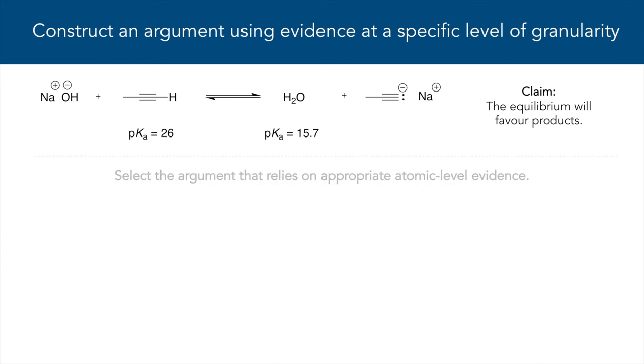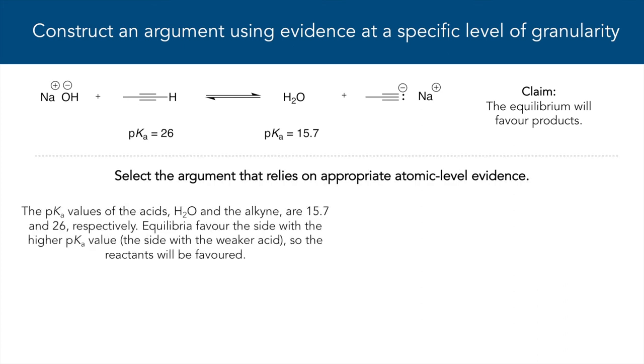Select the argument that supports the given claim using appropriate atomic level evidence. One, the pKa values of the acids H2O and the alkyne are 15.7 and 26 respectively. Equilibria favor the site of the higher pKa value, the site of the weaker acid, so the reactants will be favored.